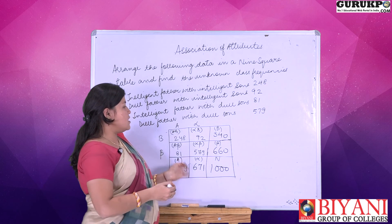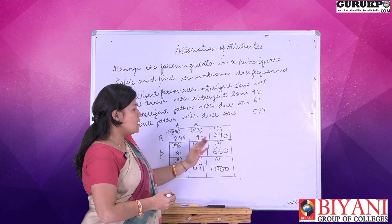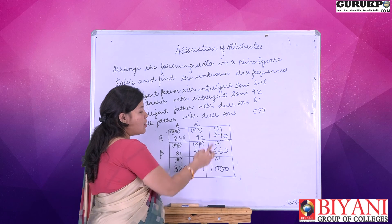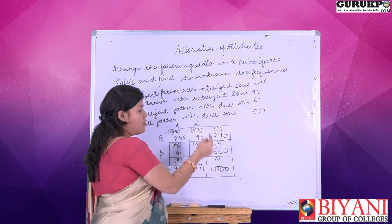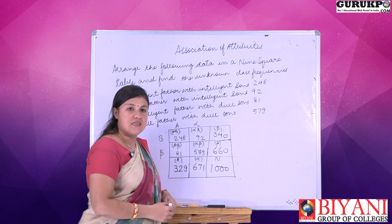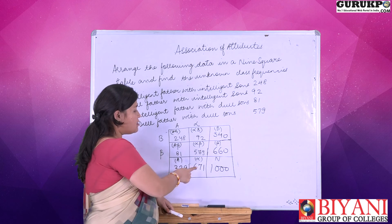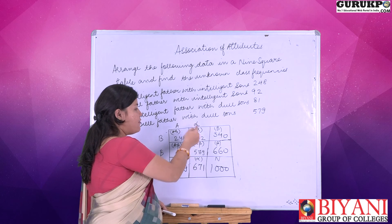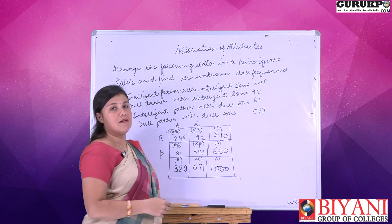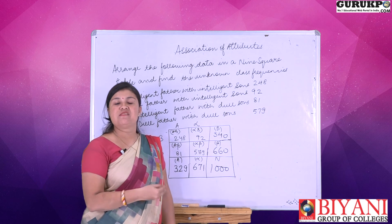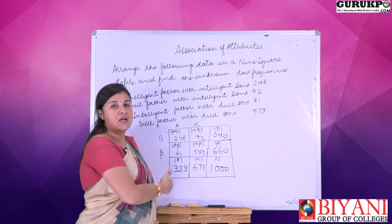This is all about our 9-square table. If a value is missing — for example, if beta is missing — we can simply calculate it by subtracting B from N: 1000 minus 340 gives 660. In the same manner, if we want to calculate alpha beta, we can subtract alpha B from alpha. So if some class frequencies are given, we can easily calculate the remaining ones using this 9-square table.